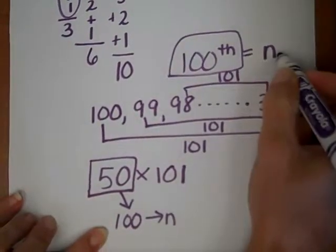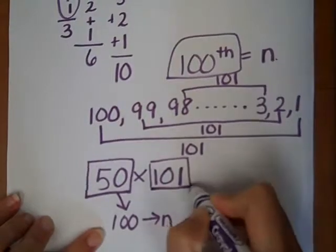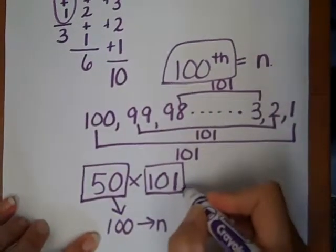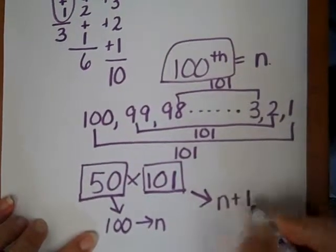Okay, if that is n, which it is in this case, what can we use for one hundred and one? If n is one hundred, what is one hundred and one in terms of n? Well, one hundred and one would be n plus one.